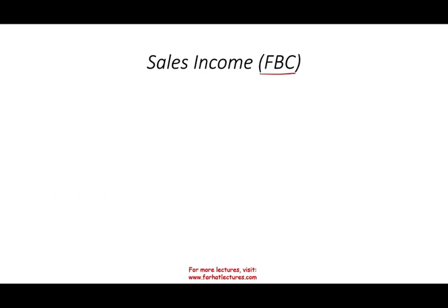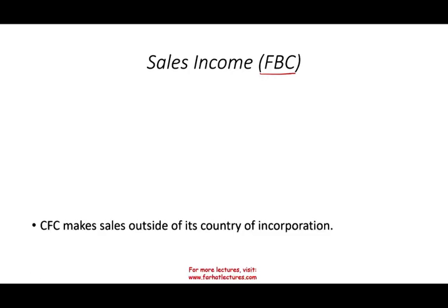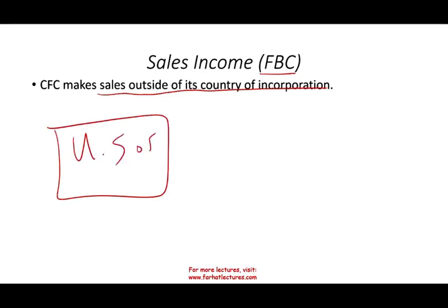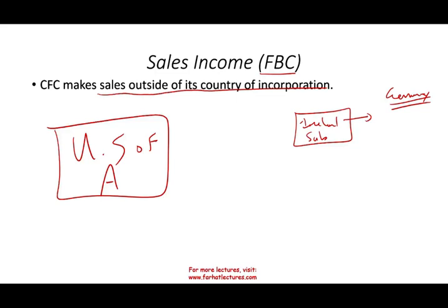Another type of income you cannot shelter is foreign-based company sales income. This is when the Controlled Foreign Corporation makes sales outside its country of incorporation. For example: the U.S. company creates a subsidiary in Ireland, and that Irish company sells to Germany. They make sales outside their country of incorporation — Ireland — and that is considered Subpart F income. It means it has to be taxed now; it's not considered deferred sales income from a subsidiary.